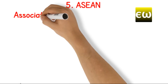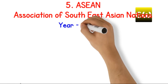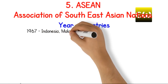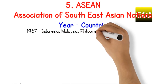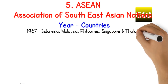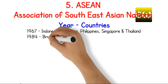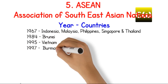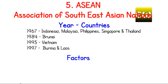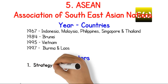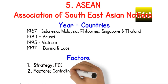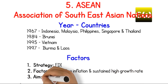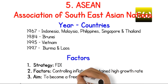Association of Southeast Asian Nations. Year and countries: 1967, Indonesia, Malaysia, Philippines, Singapore and Thailand. 1984, Brunei. 1995, Vietnam. 1997, Burma and Laos. Factors: 1. Strategy, FDI. 2. Factors: controlling inflation and sustained high growth rate. 3. Aim: to become a free trade area.